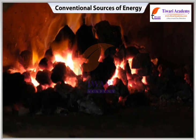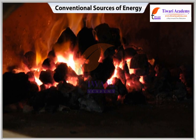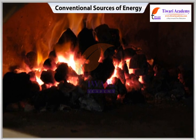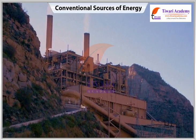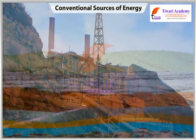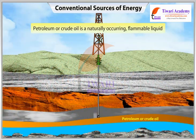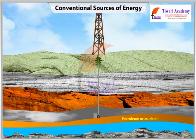Coal is a bulky material which loses weight on use as it is reduced to ash. Hence, heavy industries and thermal power stations are located on or near the coal fields. Petroleum, or crude oil, is a naturally occurring flammable liquid formed under the earth's surface by the decomposition of marine organisms.